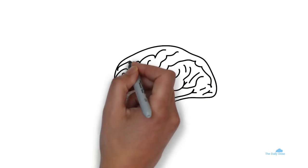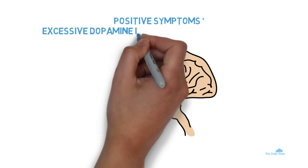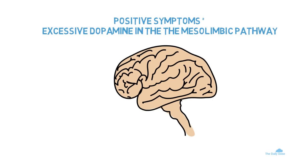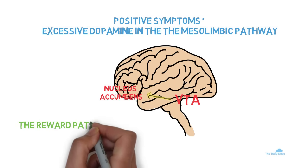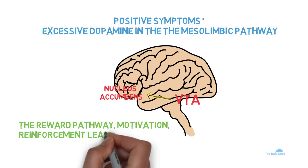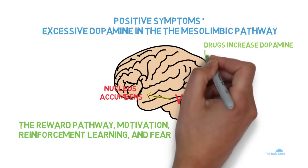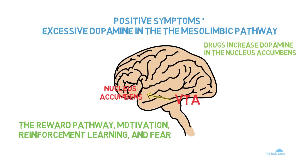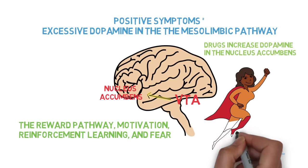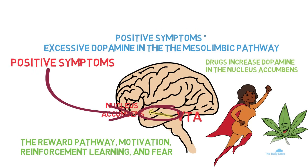So exactly where in the brain, and how can we explain positive and negative symptoms? Positive symptoms like hallucinations and delusions are caused by excessive dopamine firing in the mesolimbic pathway. The mesolimbic pathway is essentially a string of neurons that travel from the ventral tegmental area, or VTA, to the nucleus accumbens. It is also known as the reward pathway, and it regulates motivation, reinforcement learning, and fear, among other cognitive processes. When someone uses addictive drugs, dopamine neurons in the VTA are activated, projecting to the nucleus accumbens via the mesolimbic pathway, leading to increased dopamine levels there. Too much dopamine in this pathway is believed to lead to psychotic symptoms, or positive symptoms in schizophrenia.